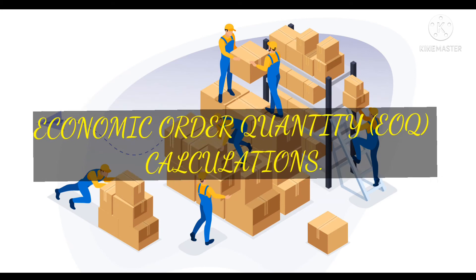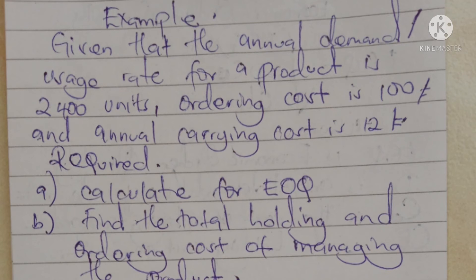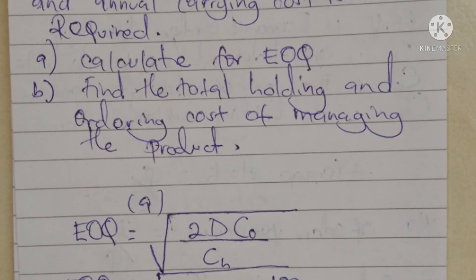Now let's look at the Economic Order Quantity (EOQ) calculations. The example gives us: annual demand of 2,400 units, ordering cost per order of 100 shillings, and annual carrying cost per unit of 12 shillings. We are required to calculate the EOQ and the total holding and ordering cost for managing the product.